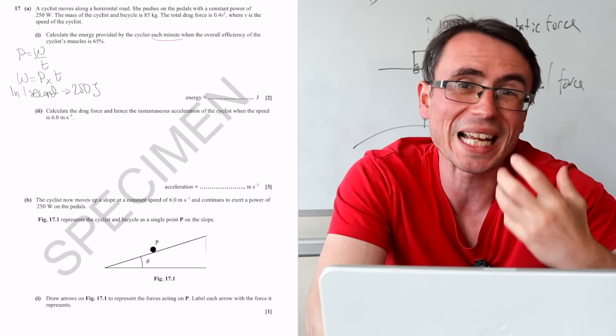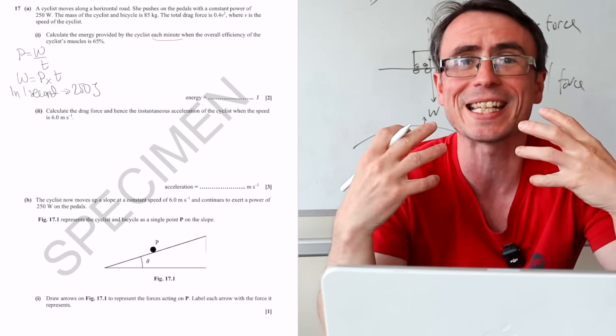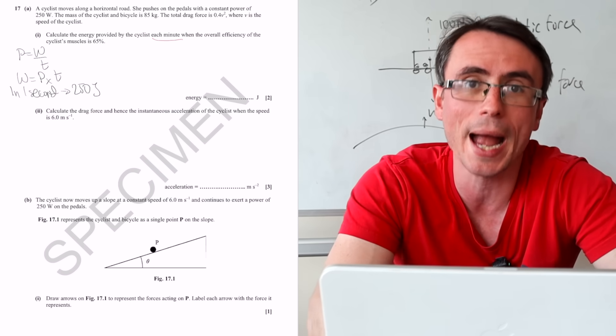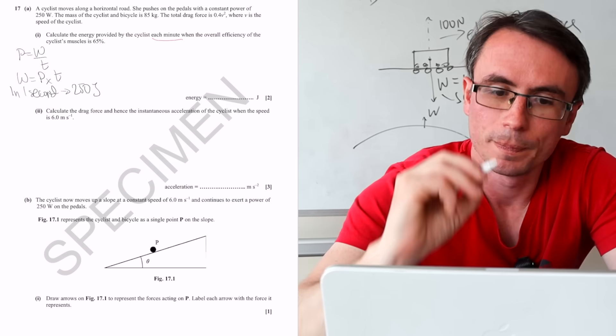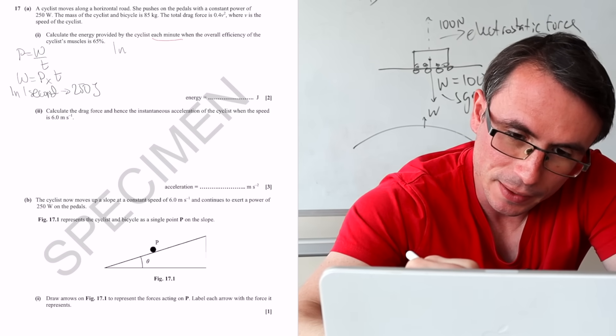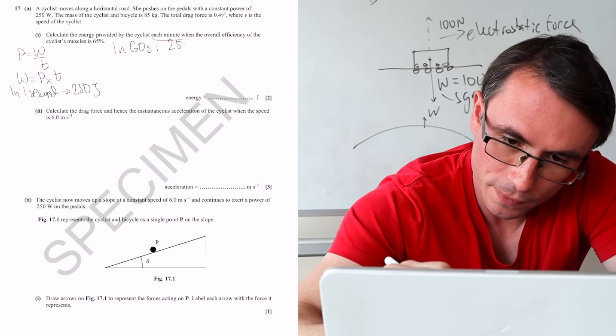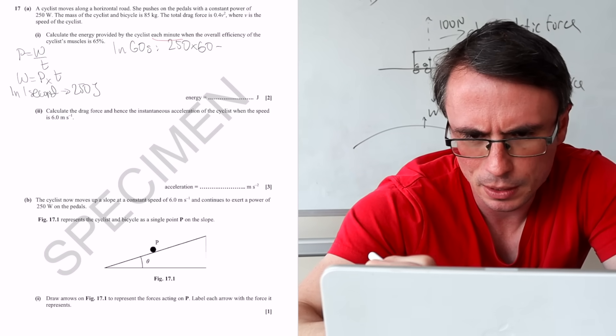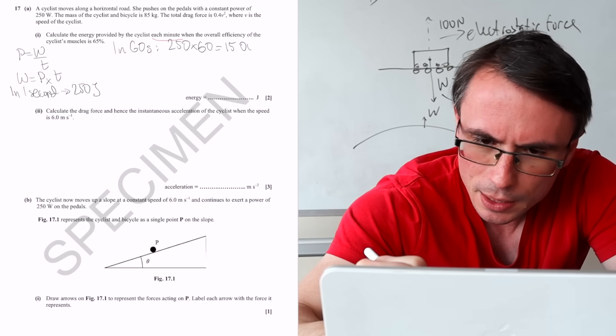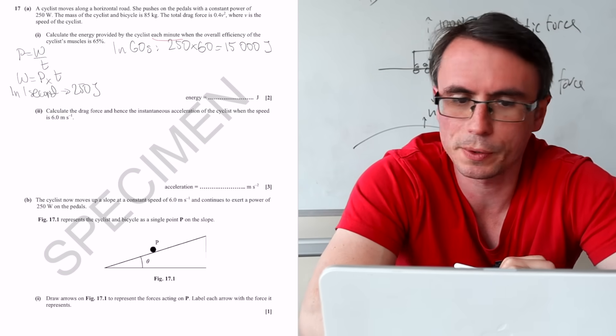but it will make it far more likely for you to score marks because the examiners will know what you're actually writing. So in 60 seconds, this would mean that we will have 250 multiplied by 60, which is 15,000 joules.